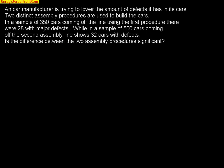What we're going to work on here is a two-sample test for proportions. We have a car manufacturer trying to lower the amount of defects in its cars. Two distinct assembly procedures are used. In a sample of 350 cars from the first procedure, there were 28 with major defects. In a sample of 500 cars from the second assembly line, there were 32 cars with defects. Is the difference between the two procedures significant? We want to determine if one procedure is better than the other.